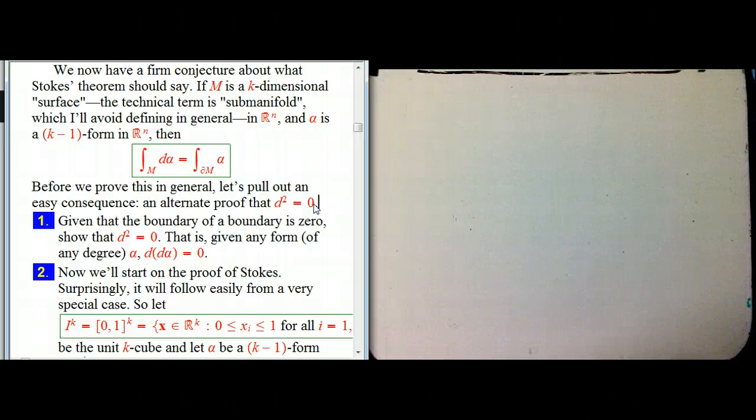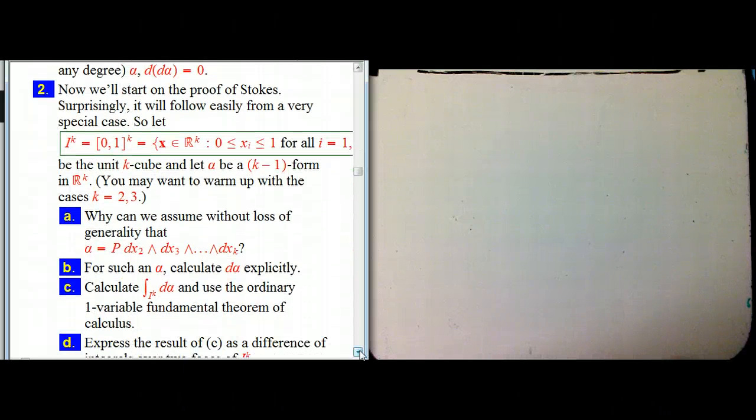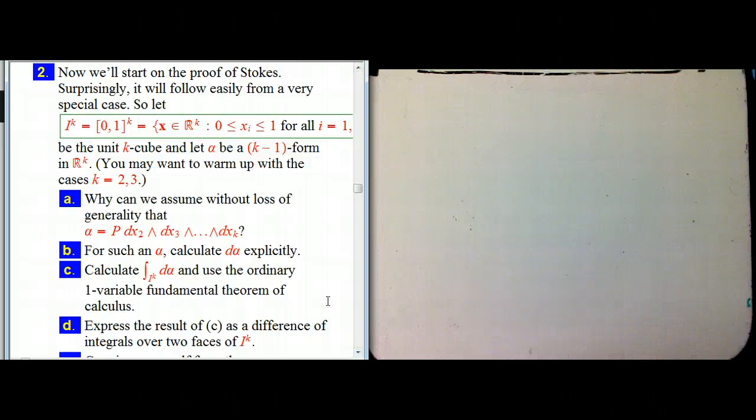All right, so now number two, proof of Stokes. The idea is a very popular one in mathematics, prove something in a model case, and then show you can reduce the general case to a model. And it's amazing.